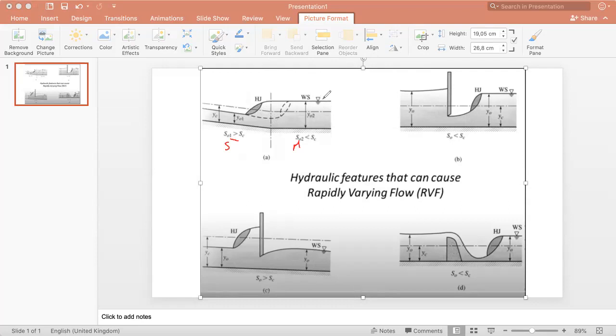Downstream, the uniform flow water height would be higher than the critical one. Then the water level has to rise from supercritical here to subcritical here.